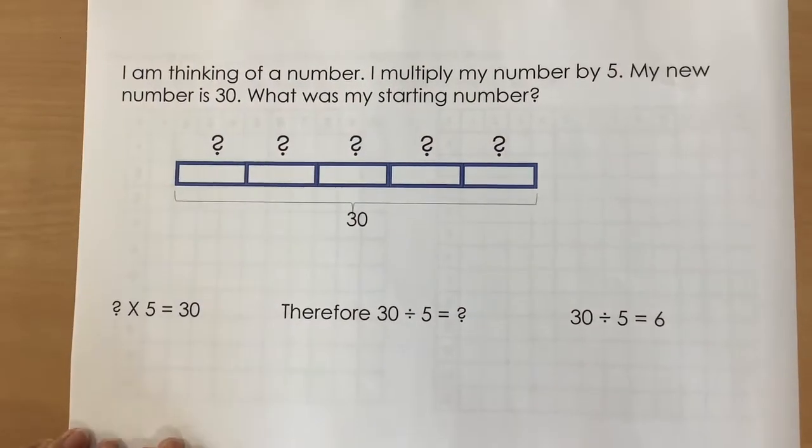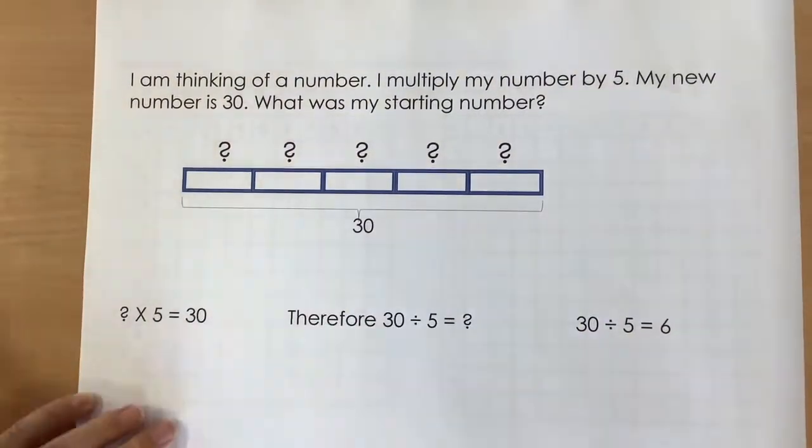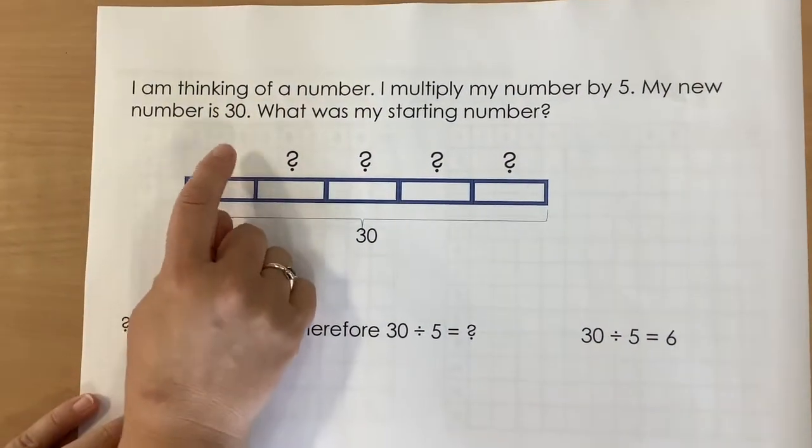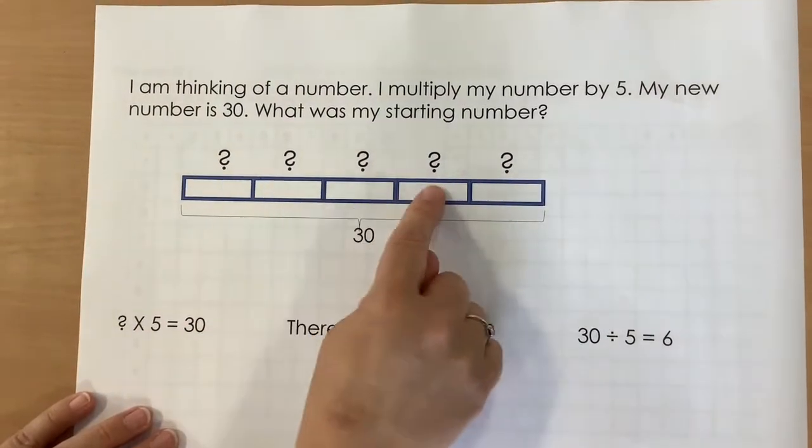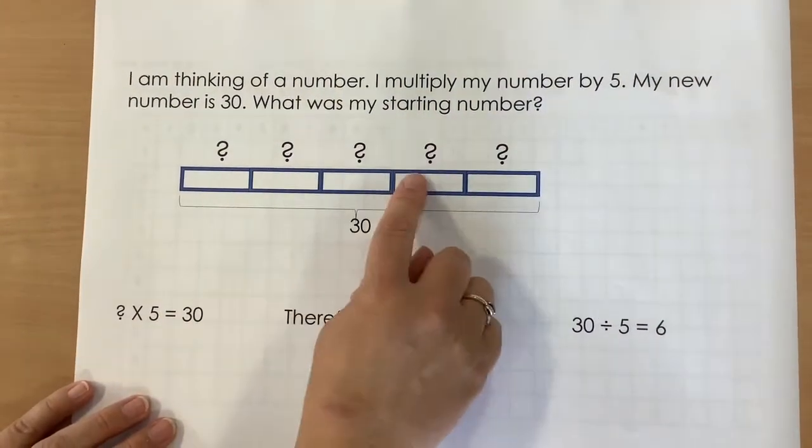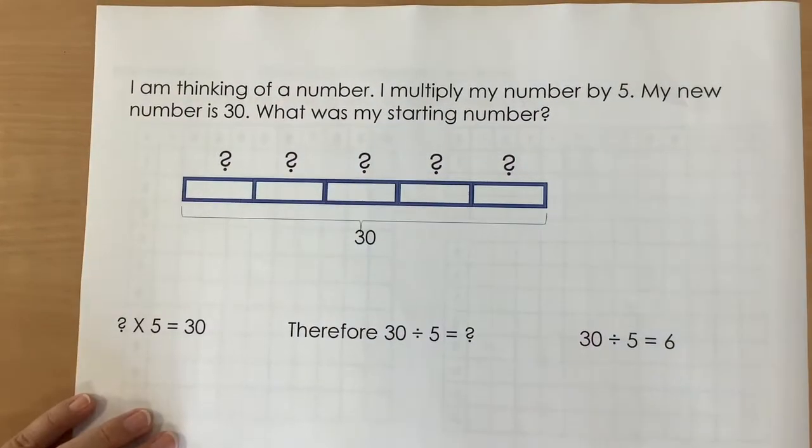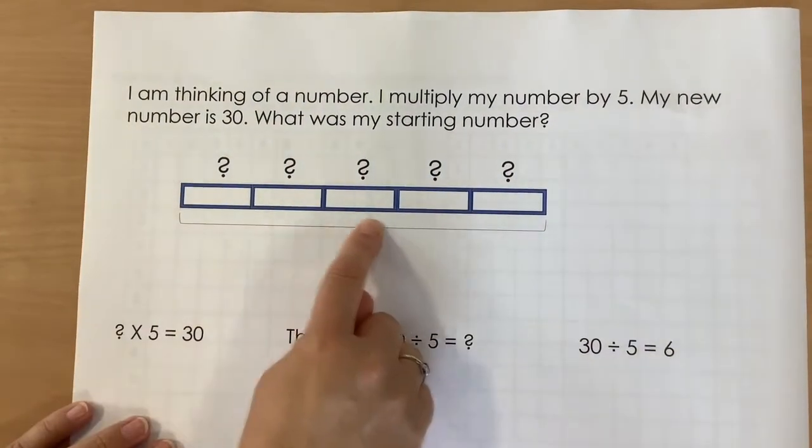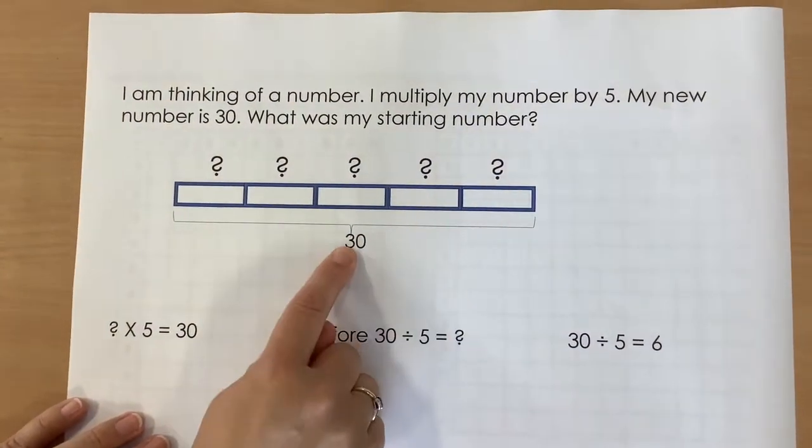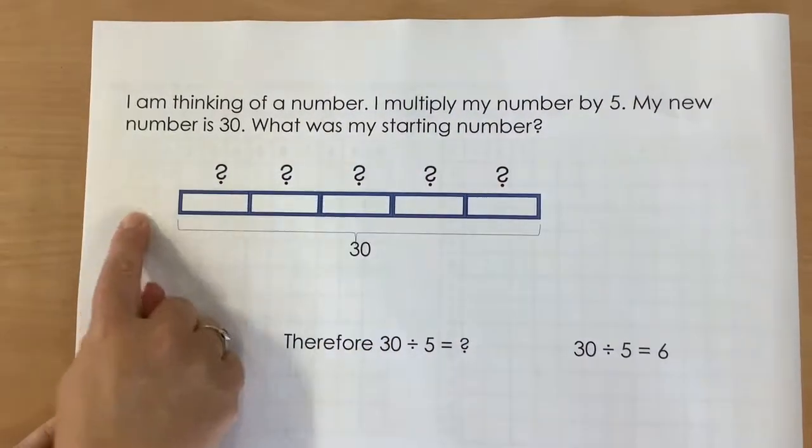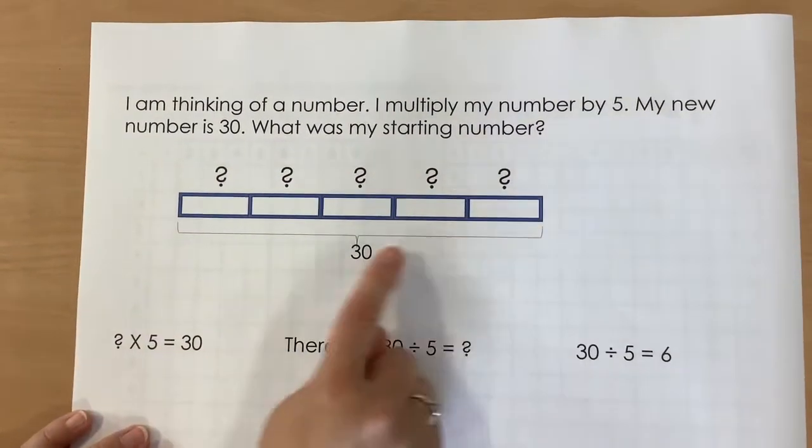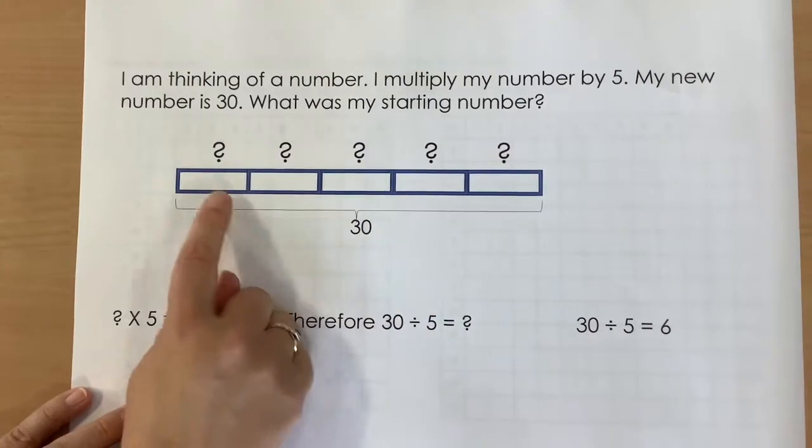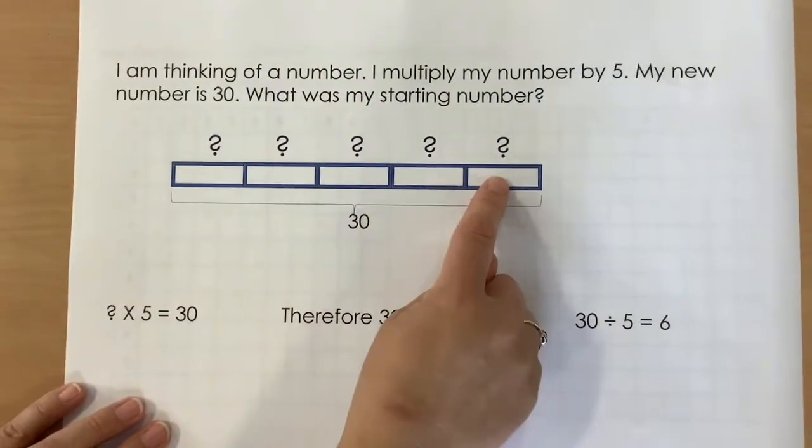So I am thinking of a number. So I have drawn a bar model. Here is the number I am thinking of and I have multiplied it by 5. So I have made 5 lots of my mystery number. And I know that my number, once I've done that, is 30. So looking at this bar model, we can also see that we have got 30 divided into 5 groups.